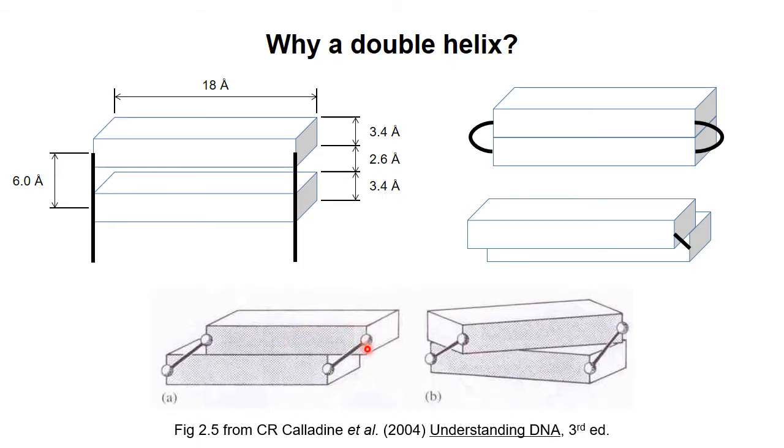It turns out that you need to rotate one base pair relative to the other in order to bring the hydrophobic surfaces together while avoiding steric clashes among the backbone atoms. Twisting in the way shown is more energetically favorable than twisting in the other direction, giving rise to a right-handed helix when a series of bases are stacked on top of each other in this way.